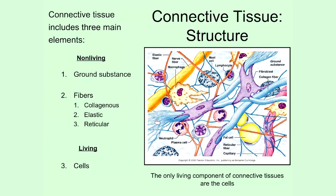If you look at this diagram, this artist's representation of the connective tissue, you'll notice that we've got these long, stringy fibers that are scattered through the tissue. This first one is what's known as a collagenous fiber. These fibers are the biggest fibers that you find in connective tissue. They're made out of a protein known as collagen, and collagen is incredibly strong.